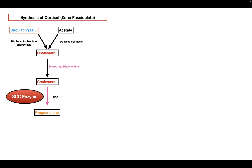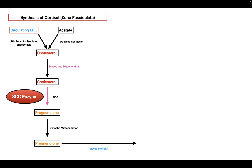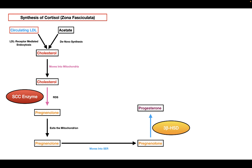After pregnenolone is formed, it moves out of the mitochondria and into the smooth endoplasmic reticulum. Once pregnenolone is in the smooth endoplasmic reticulum, it undergoes a few more reactions. The first reaction is catalyzed by the enzyme 3-beta-HSD, which catalyzes the conversion of pregnenolone into progesterone.